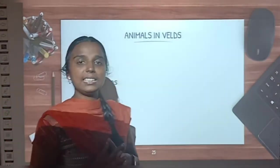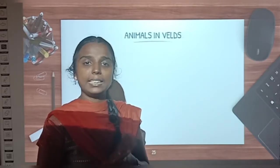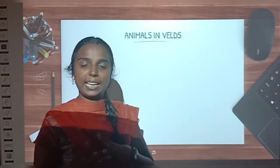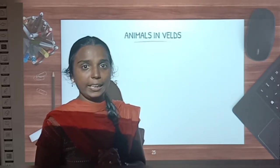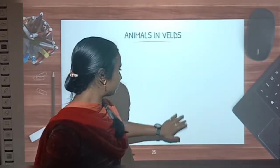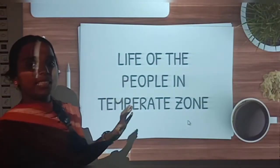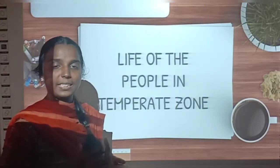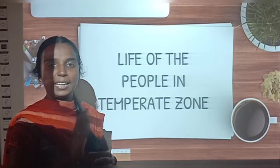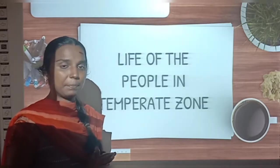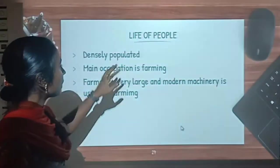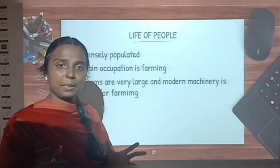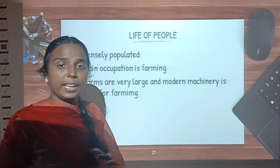So these are the things about the animal life in the temperate zone — some of the animals and birds we can see here. Now let us discuss about the life of the people in the temperate zone — their population and the activities we can see in this temperate zone. First thing — it is densely populated. Densely populated means thickly populated.